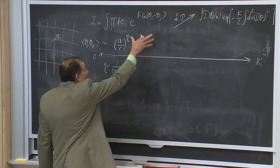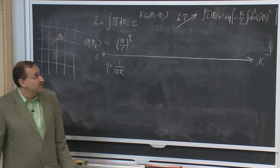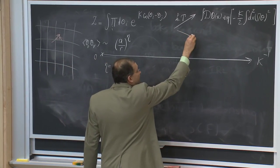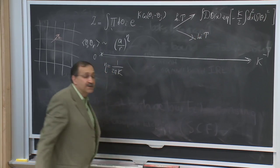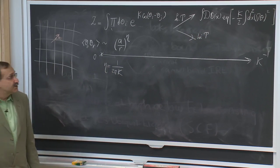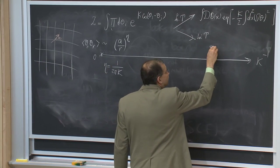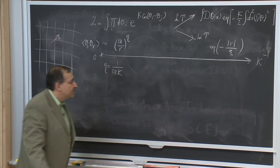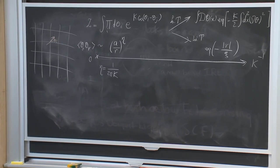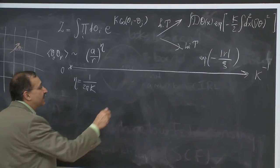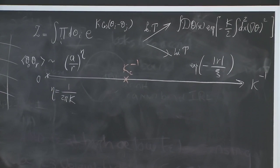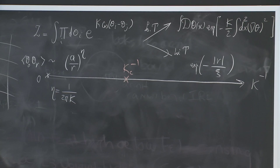On the other hand, if we start with the full cosine and do a typical high temperature expansion, from the high temperature expansion we conclude that these correlations decay exponentially — which are two totally different forms. Presumably there should be some critical value of k or temperature that separates a low temperature form with power law decay and a high temperature form with exponential decay of correlations.